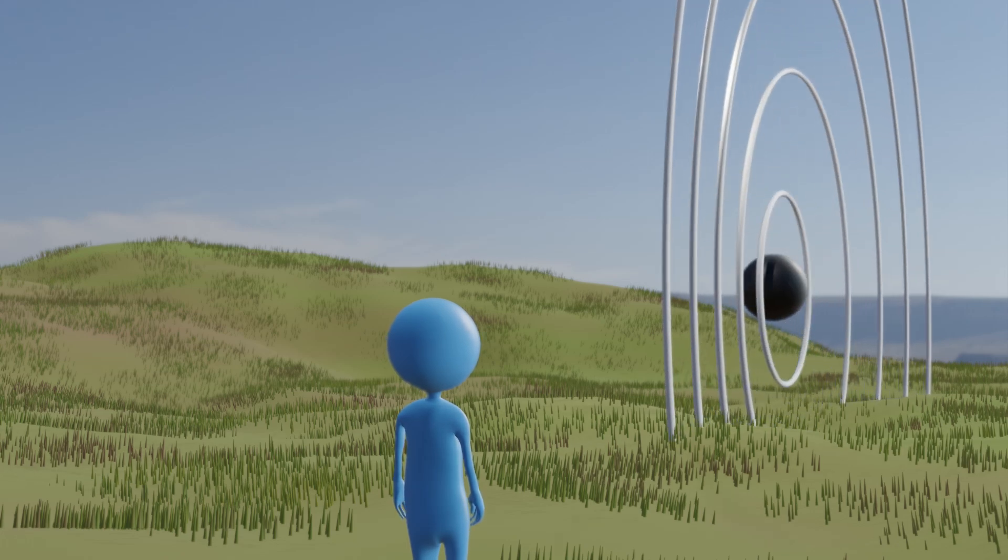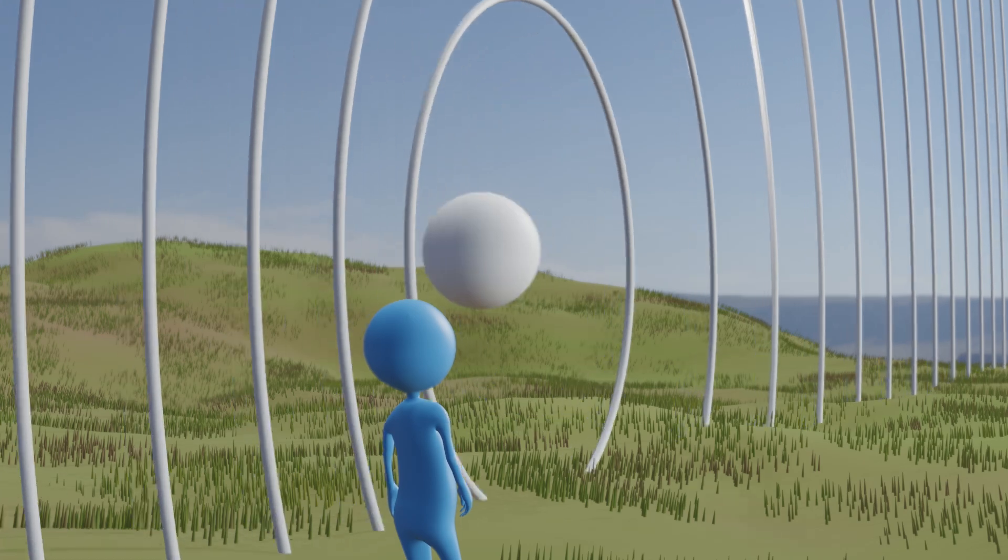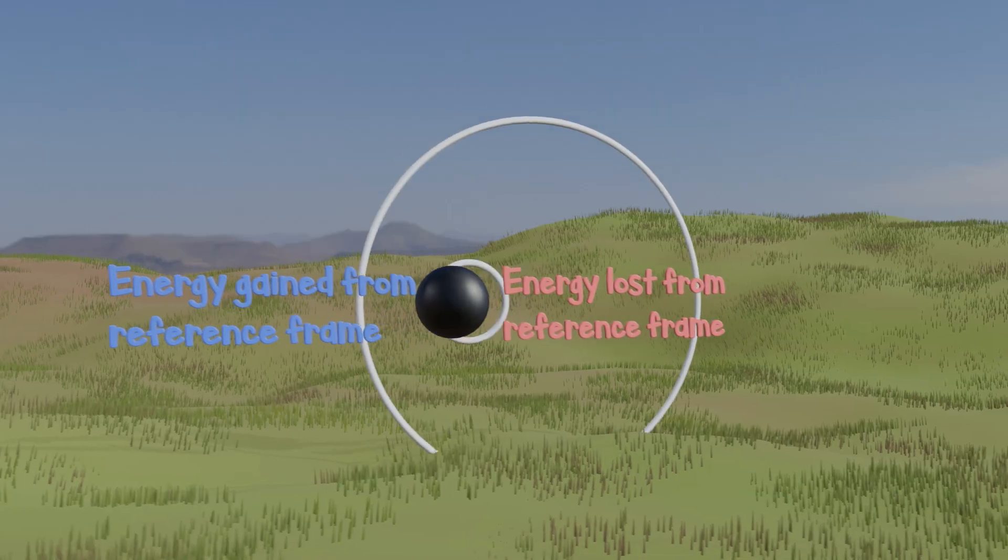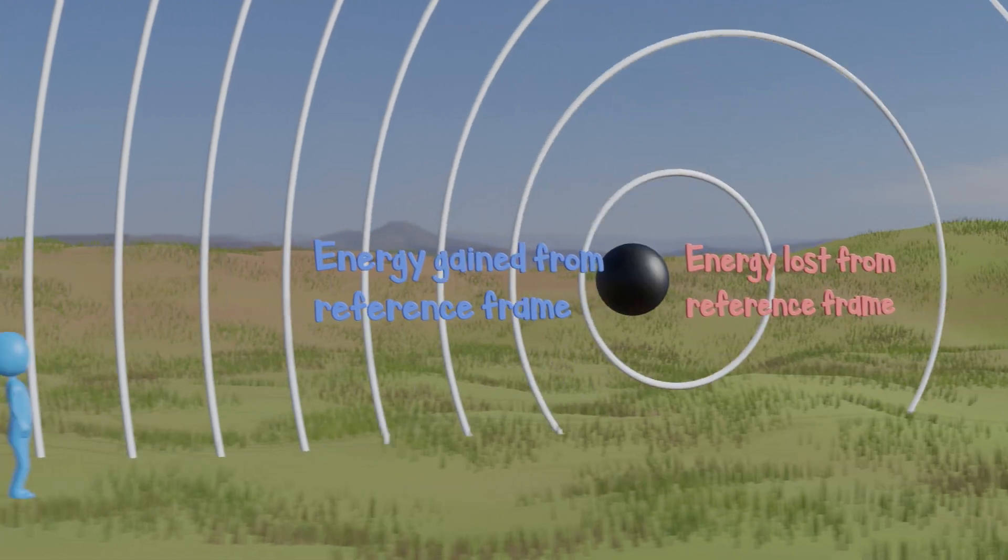The Doppler effect is a phenomenon that occurs when a receiver of waves is in a different frame of reference than the emitter. The different energy states of our reference frames lead to differences in measured energy levels in the wave.